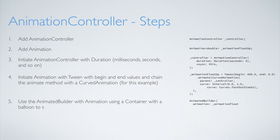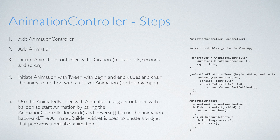For our example, use the animated builder with an animation using a container with a balloon. Start the animation by calling the animation controller dot forward and reverse to run the animation backwards. The animated builder widget is used to create a widget that performs a reusable animation. Once you break down the steps, it becomes more manageable and less complicated.